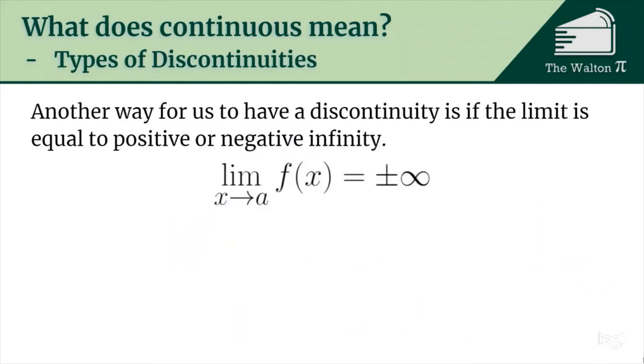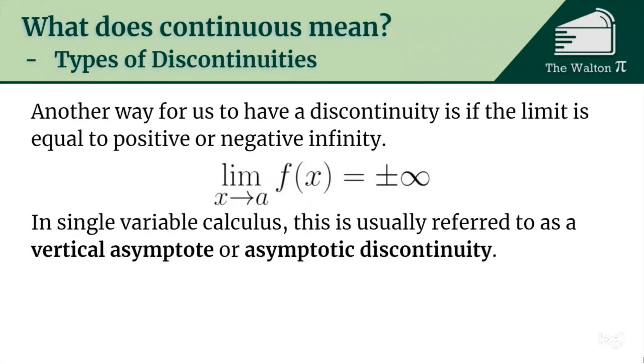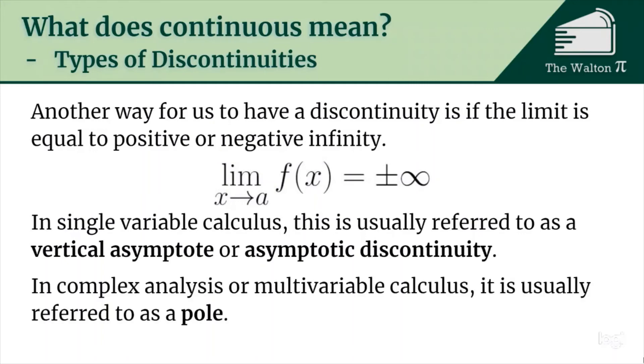Another way we could have a discontinuity is if the limit is equal to positive or negative infinity. So if the limit as x goes to a of f(x) is plus or minus infinity, this is what's called a vertical asymptote in single variable calculus or an asymptotic discontinuity. In complex analysis or multi-variable calculus it is usually referred to as a pole.